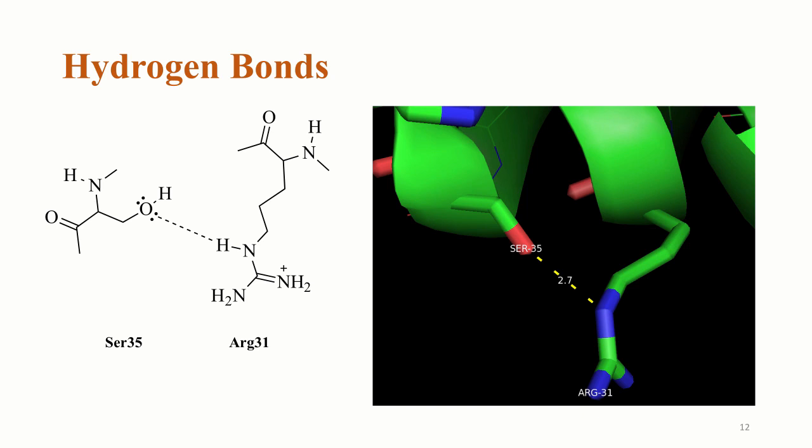In the three-dimensional structure, you can see that the hydroxyl group of serine-35 is 2.7 angstroms from the hydrogen atom of the guanidino group from arginine-31. Keep in mind that hydrogen bonds are polar interactions between residues that are at most 3.5 angstroms apart. Using the measurement tool in PyMOL is a good way to make predictions on possible hydrogen bonds within proteins.